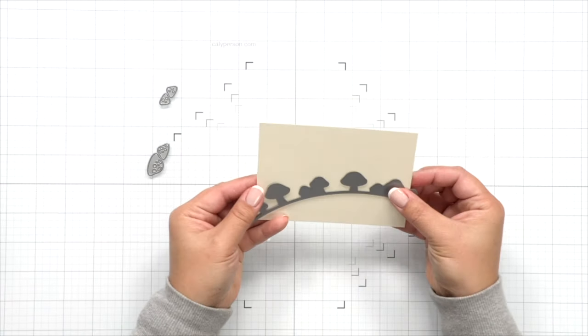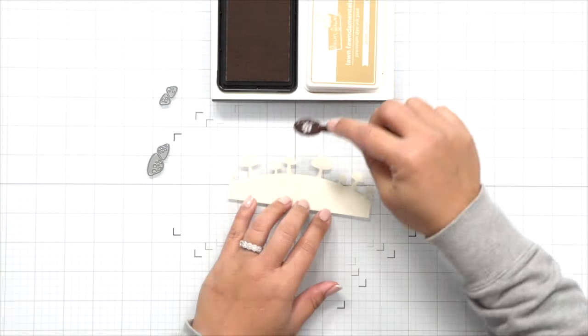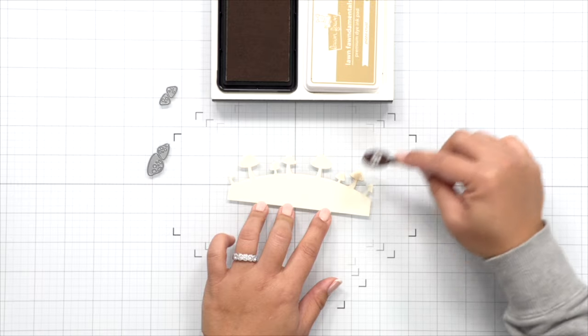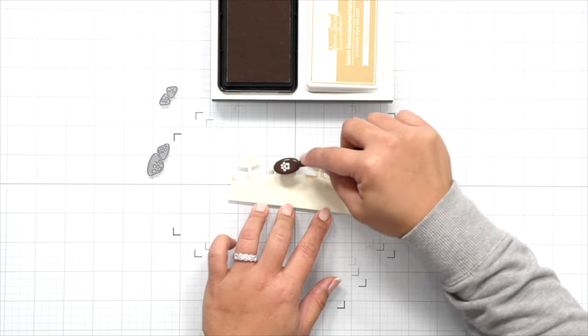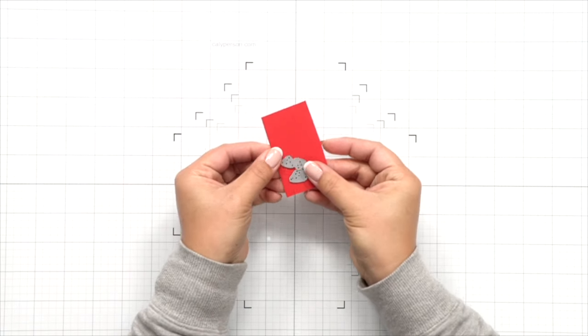Then I'm going to use that mushroom border die and die cut it with vanilla malt cardstock and this is completely optional and I don't know if it makes a difference in the long run, but I thought I would give my mushroom stems a bit more shading by adding some pizza crust ink on the stems of the mushrooms. It is a little splotchy, but don't worry.